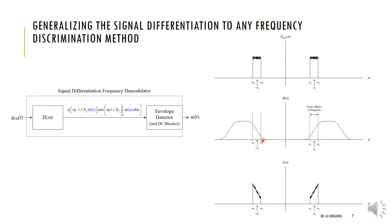We can generalize this concept: we don't always have to use a differentiator. Any circuit that discriminates frequencies will work. For example, a filter with a slope in the frequency response — not an exact differentiator — can serve as a frequency discriminator. If the modulated signal falls within that sloped band, the output will show different amplitudes for different frequencies, even if the input had constant amplitude. So we generalize signal differentiation to any frequency discriminator H(ω), as long as it has a slope in the frequency domain.